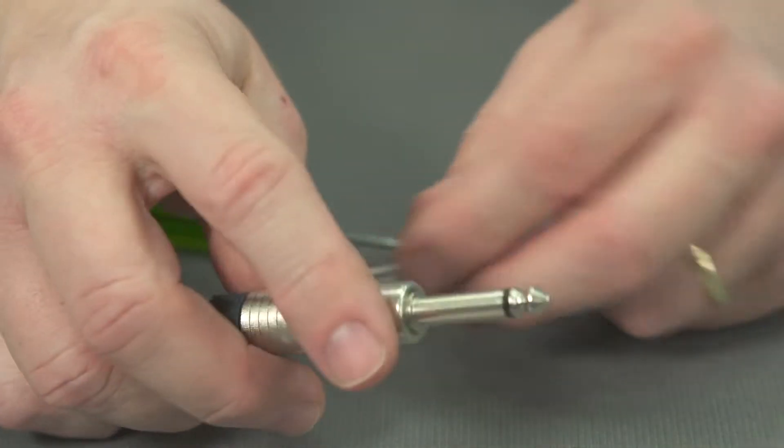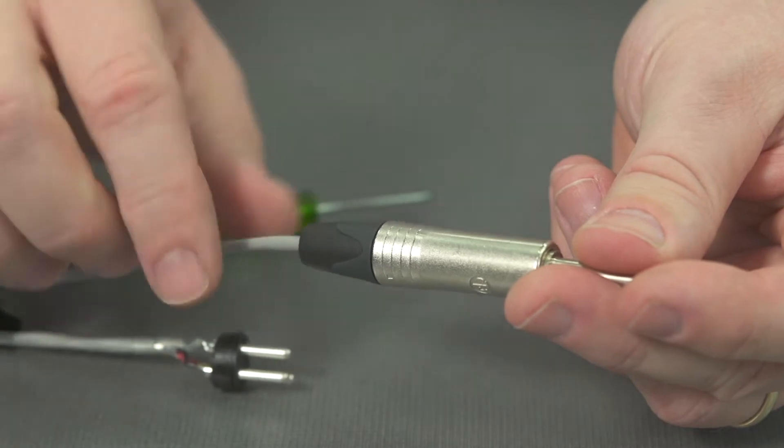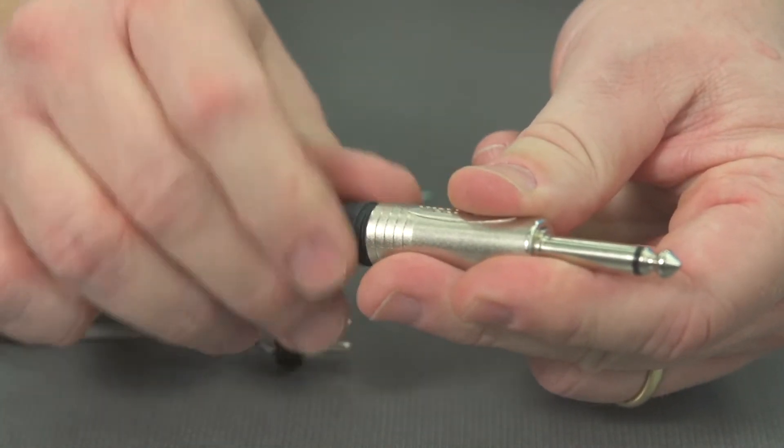Let's take a look at the other end of this. This is actually a quarter-inch tip sleeve. Again, I'm not seeing heat shrink coming out of the other side. Let's open it up and see what we find.